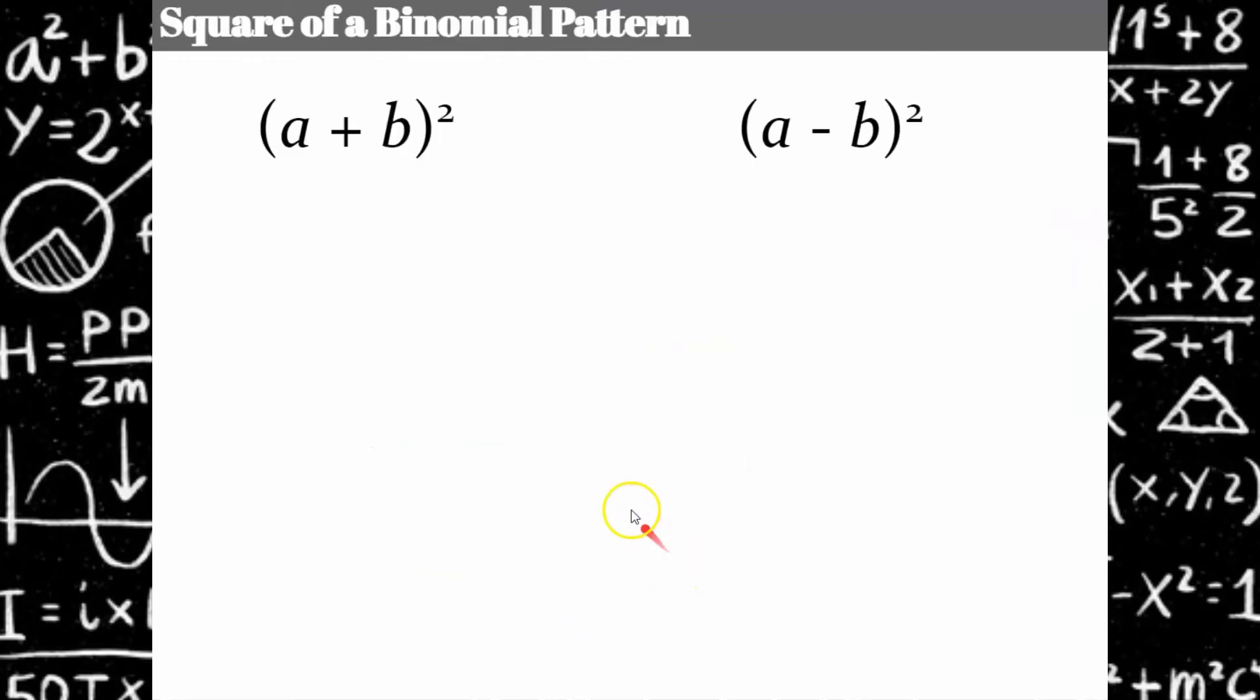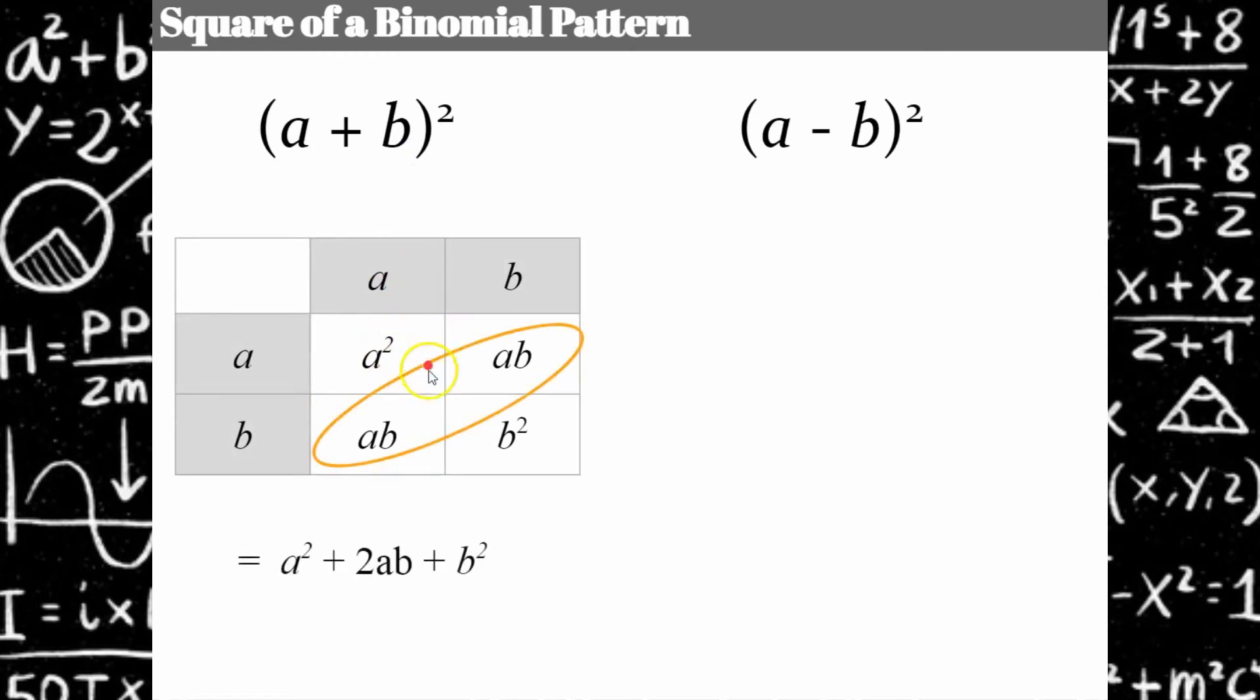Okay, now let's look at a square of a binomial. So it sounds like a lot, but all it is is I have my binomial, my two terms being added or two terms being subtracted, and I square them. So when I do that, I'm going to show it out in the table so that you can visually see what happens, and I have my like terms,